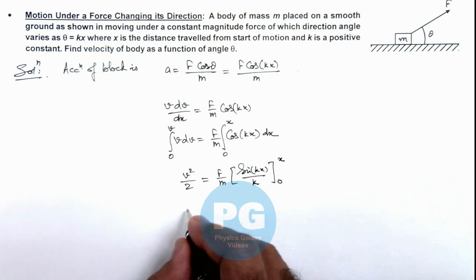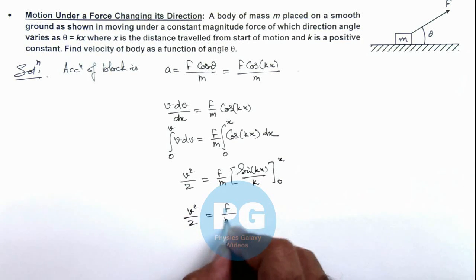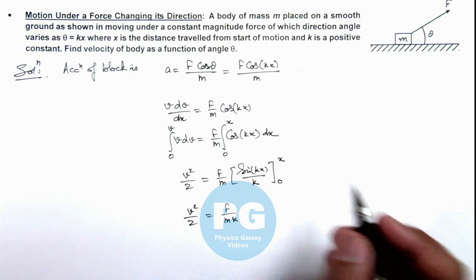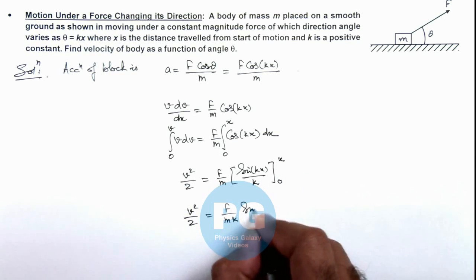So we substitute the value of limits: v squared by 2 is f by mk, this is sine kx minus sine zero can be taken as zero, so this is sine kx only.